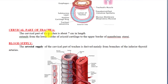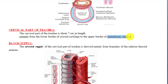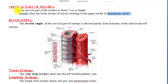The cervical part of the trachea is about 7 centimeters in length. It extends from the lower border of the cricoid cartilage to the upper border of the manubriosternal joint.